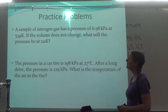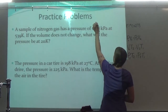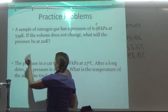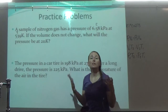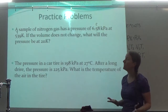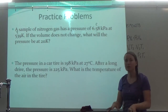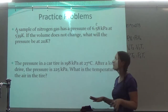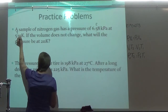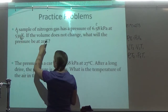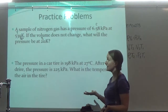A sample of nitrogen gas has a pressure of 6.58 kPa — there's my P1 — at 539 Kelvin. There's my T1. Now, some of you get so used to me giving you Celsius and always having to change it to Kelvin, that when I finally give you Kelvin, you accidentally try to change it. Remember, when it's already in Kelvin, just leave it — don't add 273. If the volume does not change, what will the pressure be? So I'm looking for P2 at 211 Kelvin — there's my T2. I gave you Kelvin for both, so you don't have to change anything.